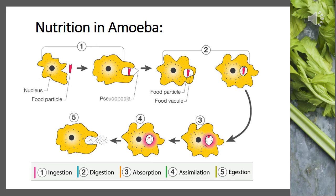When the food is completely encircled by the pseudopodia, a small cavity called a food vacuole is formed — that is step two. The food vacuole contains several digestive enzymes which help to break the complex parts of the food into simple, soluble molecules.